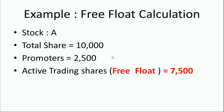Now we will see free float capitalization with an example. Suppose one company, Stock A, has a total of 10,000 shares, but out of those 10,000 the promoter shares are 2,500. So the actual active trading shares in the share market are 7,500 — these are the free float shares. The free float market capitalization is 7,500 multiplied by the price of one share. Total free float shares multiplied by price gives the free float market capitalization.